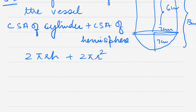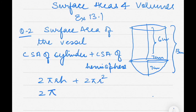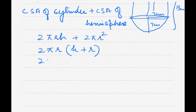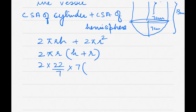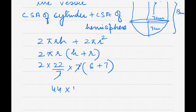We are doing only curved surface areas. Taking 2πr common, what remains is h + r. So we have 2 × (22/7) × 7 × (6 + 7). The 7 cancels, leaving 44 × 13.